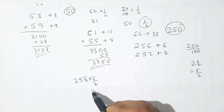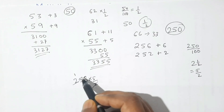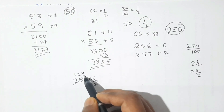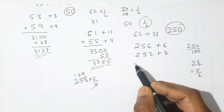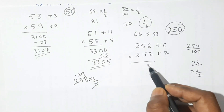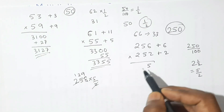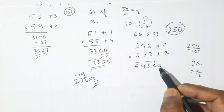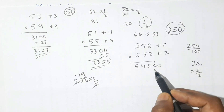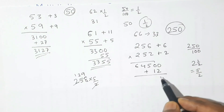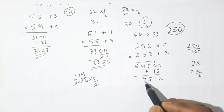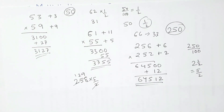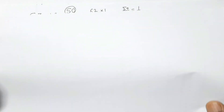Multiplying 258 by 5/2: first multiply by 2 — 2×8=16, 2×5=10, 2×2=4 — giving 516, then multiply by 5 — 5×258=1290. We place two zeros, then multiply the deviations: 6 × 2 = 12. Adding 12 gives our product: 64512.